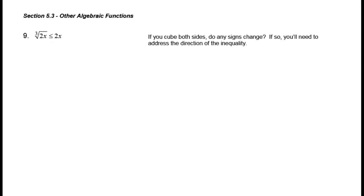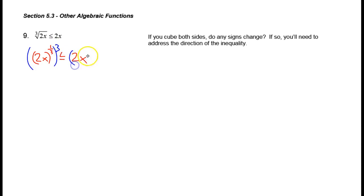Question number 9: we have the cube root of the quantity 2x, which is less than or equal to 2x. The question is, if you cube both sides, do any signs change? I know that I need to — basically here I have 2x to the 1/3 power, and that's less than or equal to just plain 2x. If I cube both sides, that preserves sign, so I do not need to flip my inequality symbol, because any odd root or odd exponent returns the same sign as the input.